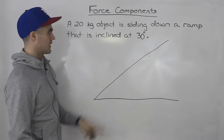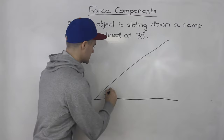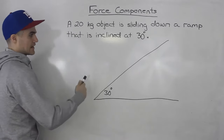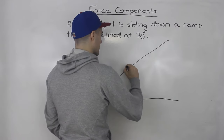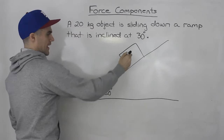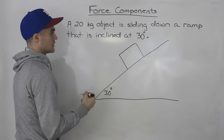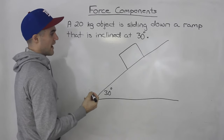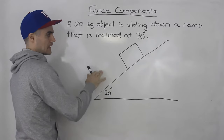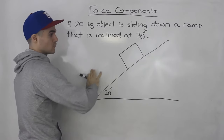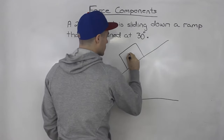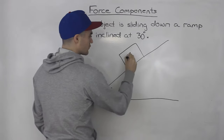We have this ramp here and it's inclined at 30 degrees, so that means this angle is 30 degrees. We have a 20 kilogram object that is sliding down the ramp. If this object is sliding down and there's nothing holding it back — no friction and no one is pushing it up the ramp — then the only force acting on it is the force of gravity.